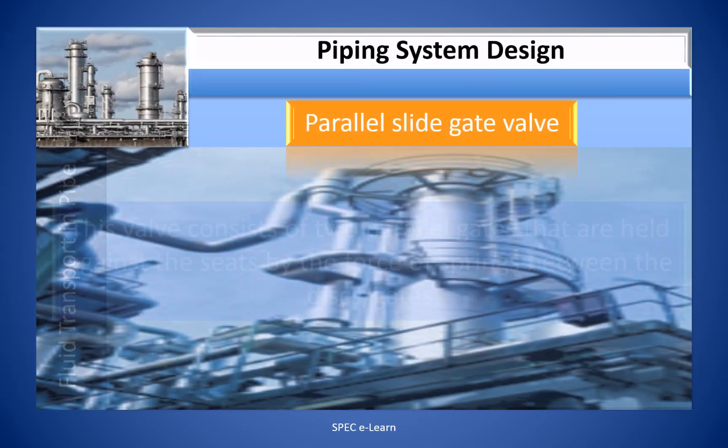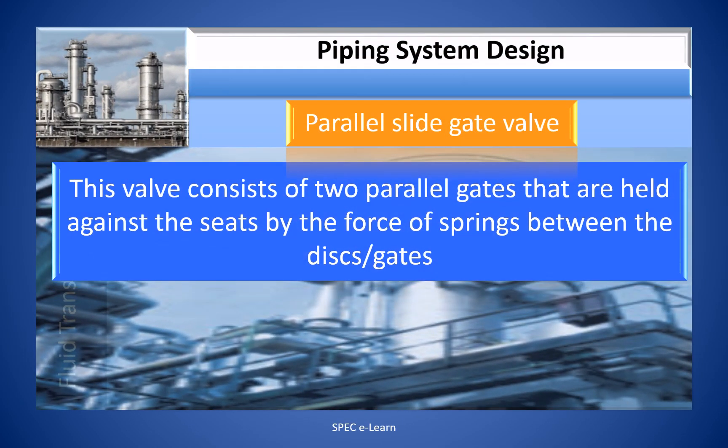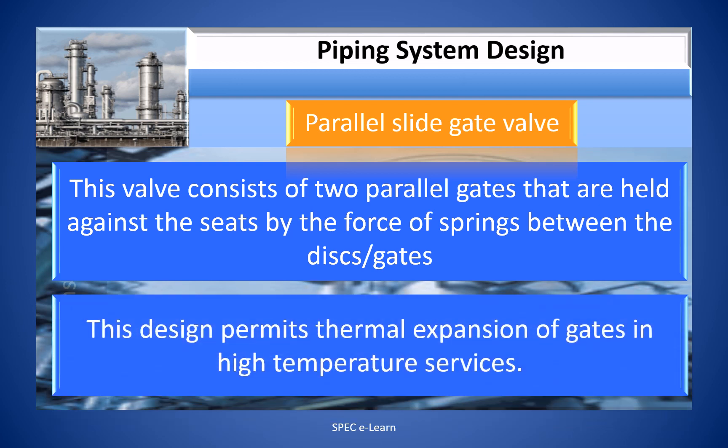The parallel slide gate valve consists of two parallel gates that are held against the seats by the force of springs between the discs or gates. This design permits thermal expansion of the gates in high-temperature services.